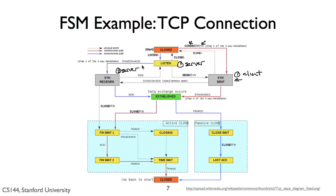Let's jump back to the client. Remember, it was in the SYN sent state. Now, when it receives the SYN-ACK from the server, it transitions to the established state. Its action is to send an ACK message — the third message of the three-way handshake. Now the client can start sending data to the server. Finally, let's go back to the server, which is in the SYN received state. When it receives the ACK from the client, it transitions to the established state and it can send data.